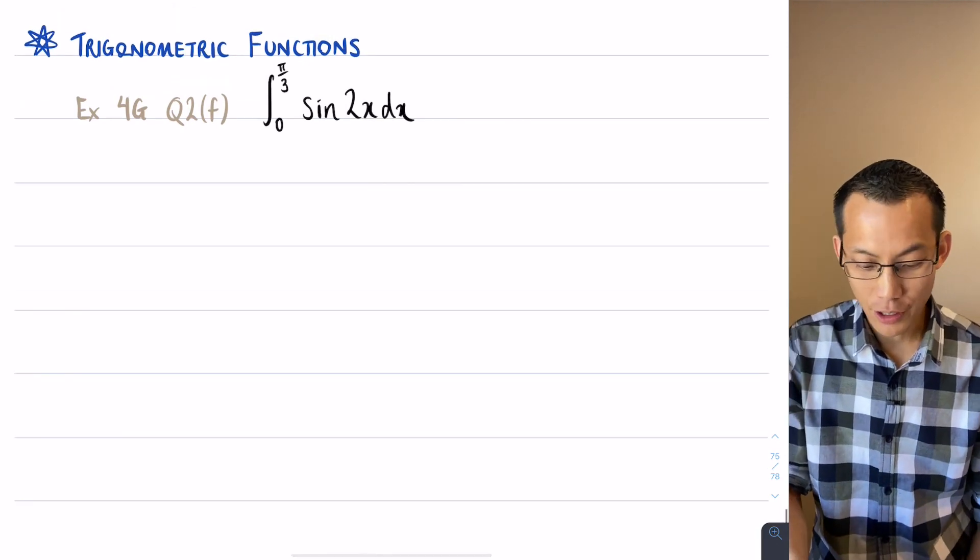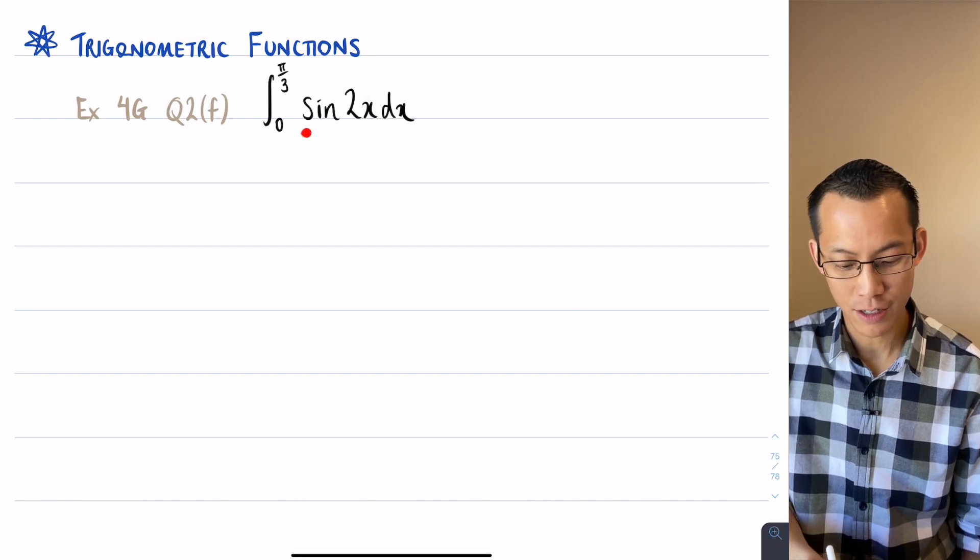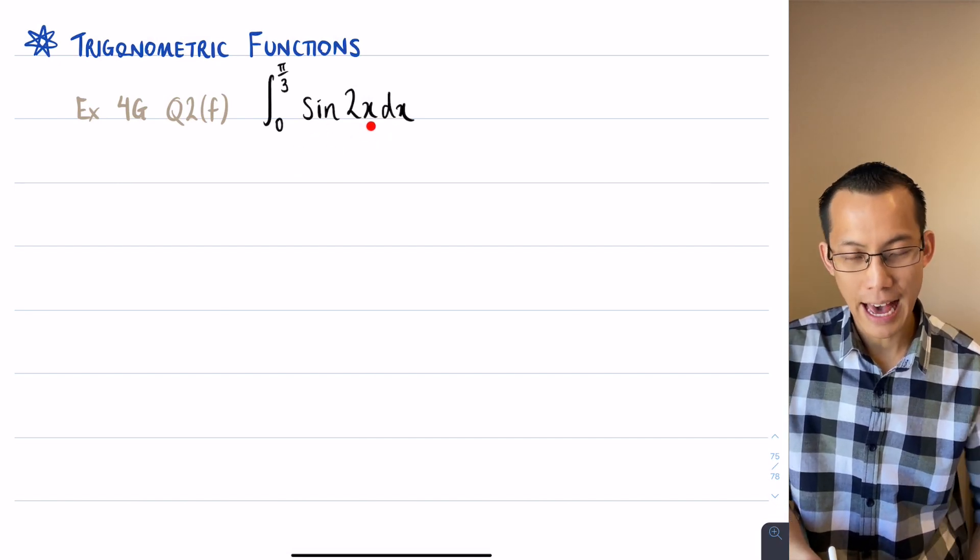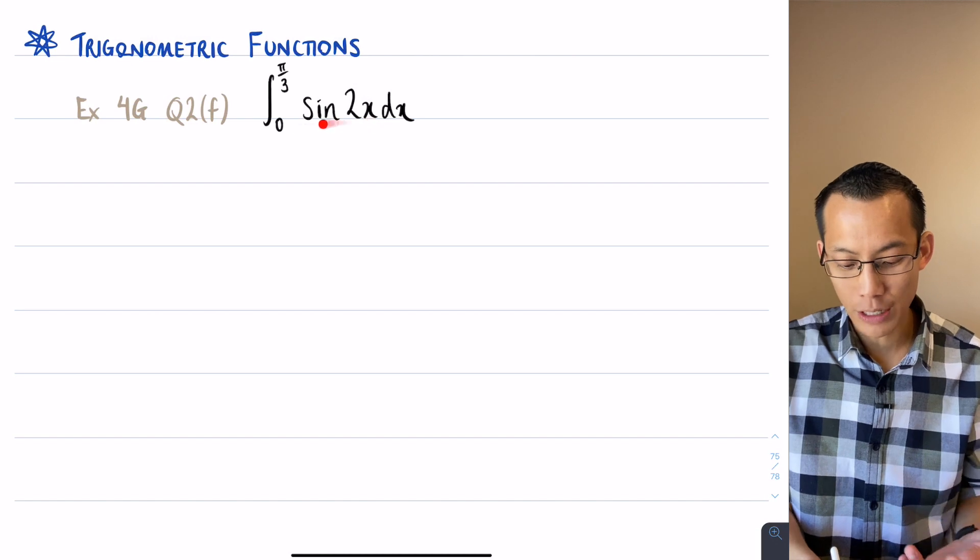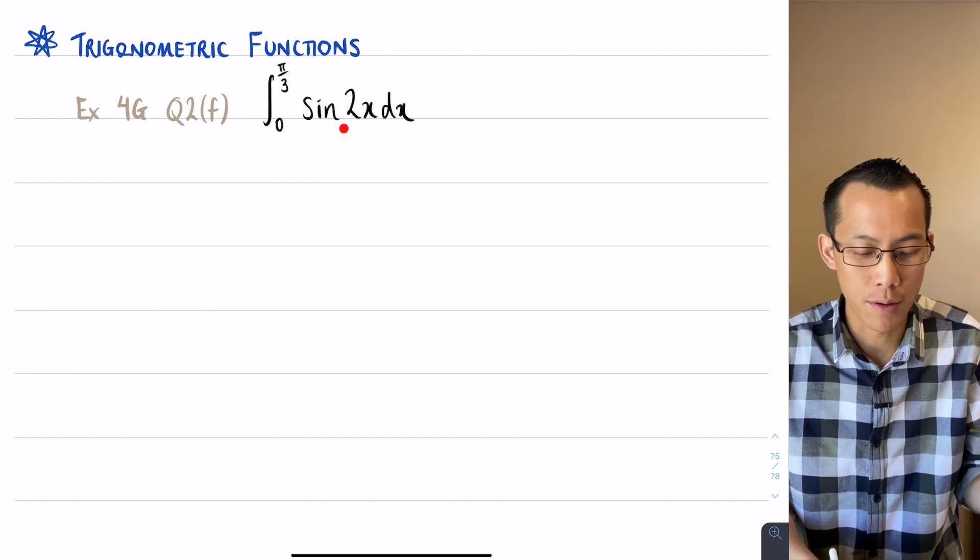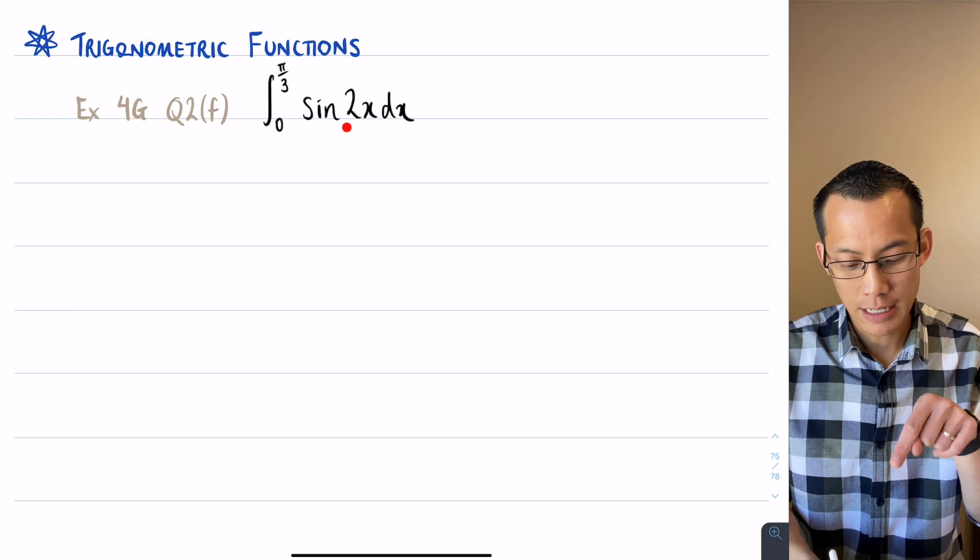For starters, I've got a straight integration question, a straight definite integral. I want the function that if I were to differentiate it, it would land me here, sine of 2x. That's how we define the primitive - the thing you would have differentiated to get this.